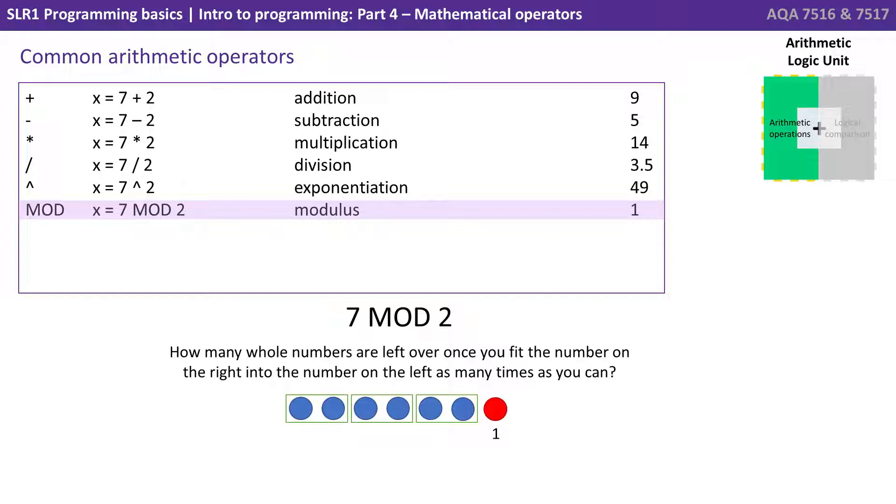So the number on the right is 2, we can fit that into the number on the left 3 whole times, and what we have left over is 1. So 7 mod 2 is 1.